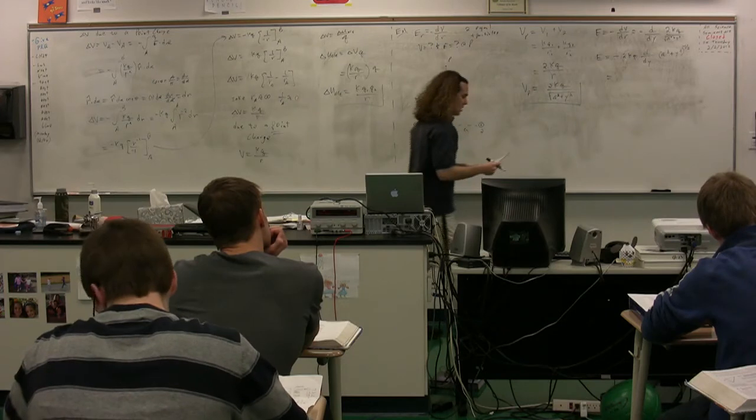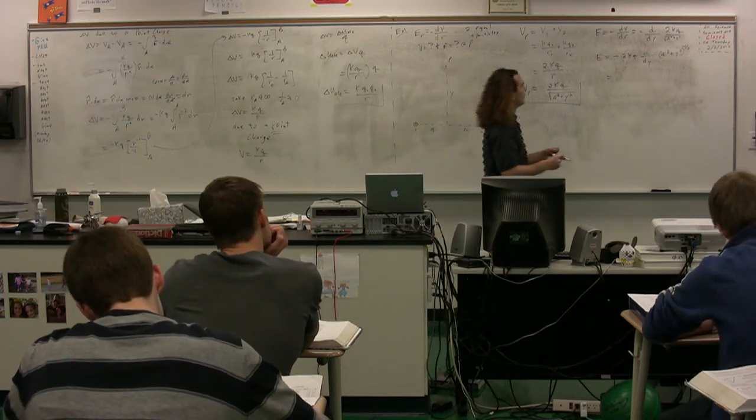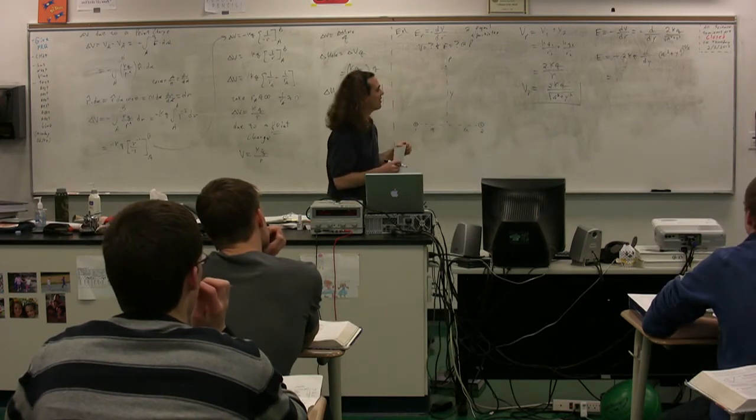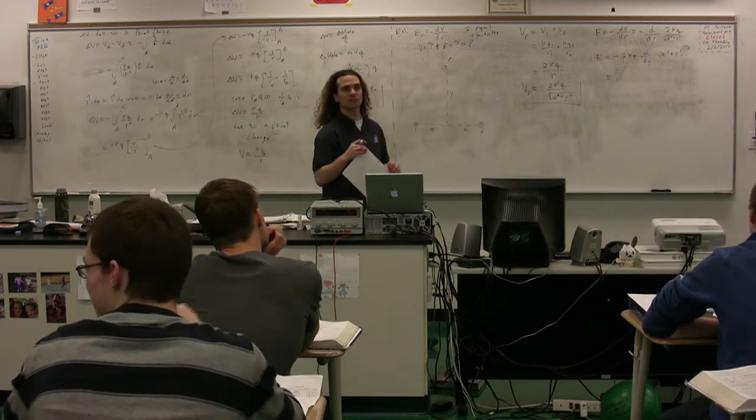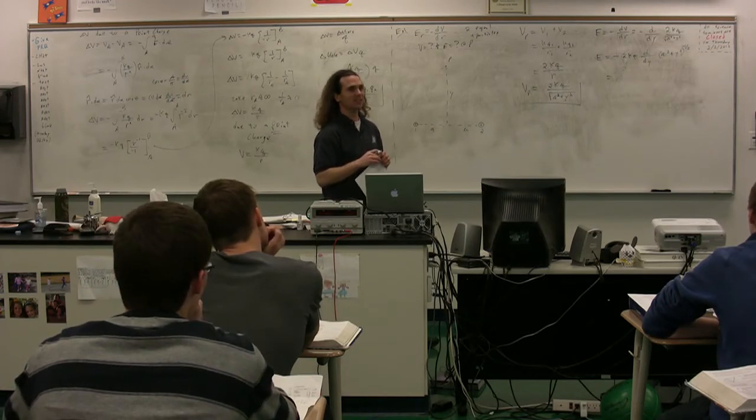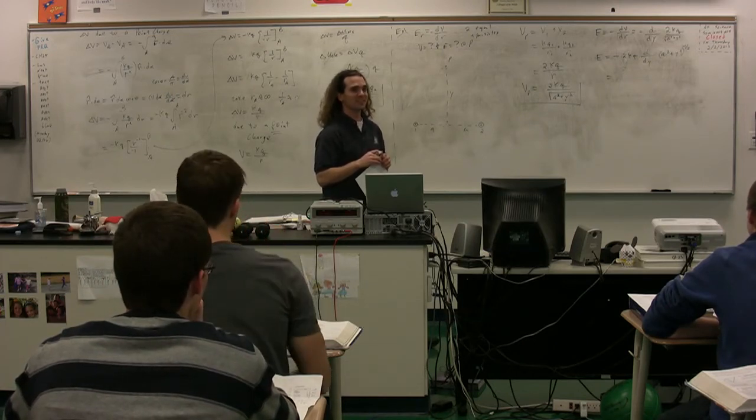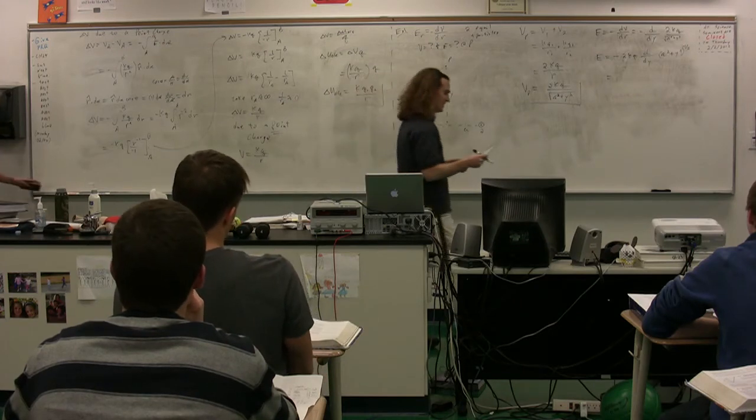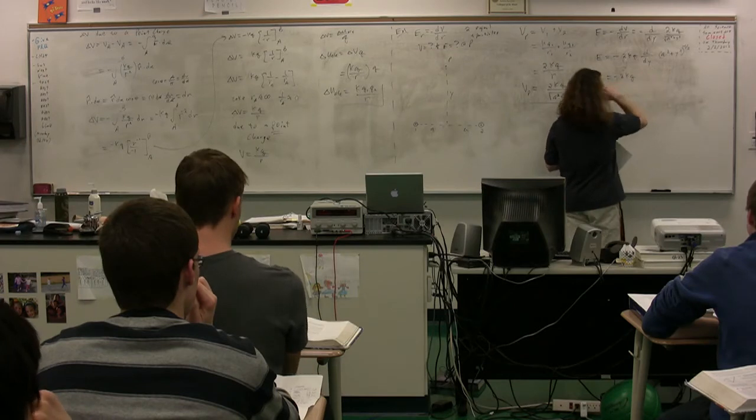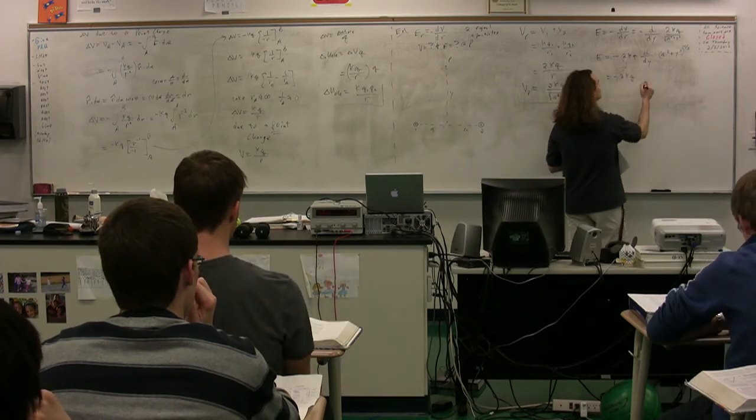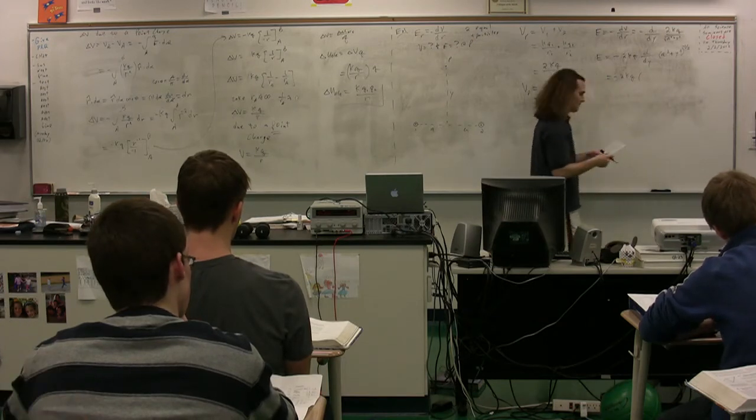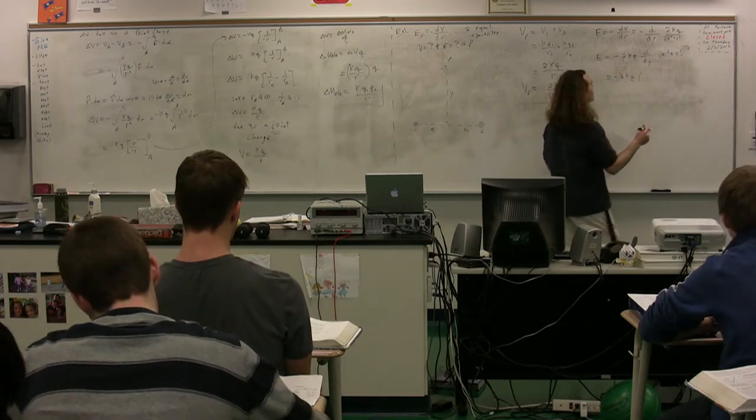I need the derivative of the square root, the negative square root of A squared plus Y squared. I was thinking of the chain rule. Go ahead. So, you have negative KQ times 2 over—times A squared plus Y squared to the power of negative 3 halves.